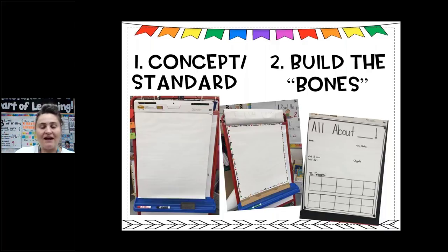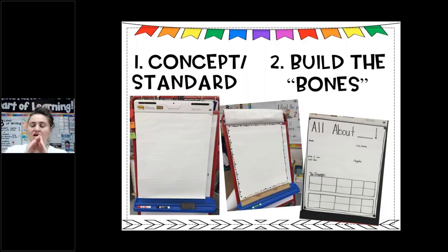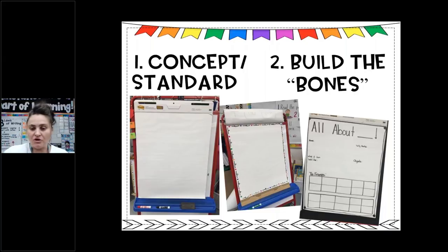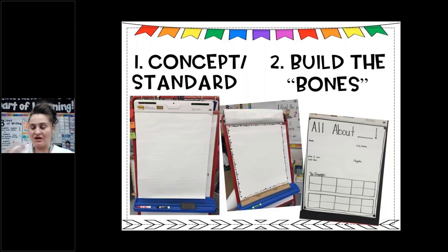Building the bones means putting the border around it, maybe drawing the big picture — but then everything else, adding the words, I want the kids to be a part of that. I just have the basic skeleton. On this slide you can see a chart for numbers 0 through 20 — the 'bones' would be 'all about,' the little notes, and the ten frame. When we do the actual lesson, we fill everything in together as a class, which makes it interactive and creates more buy-in.